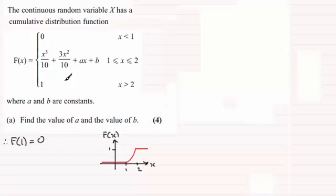And if that's the case using this here, substituting x equals 1 in, we're going to get 1³/10 which is going to be 1/10. So 1/10 plus 3/10 plus a plus b and that's going to equal 0.